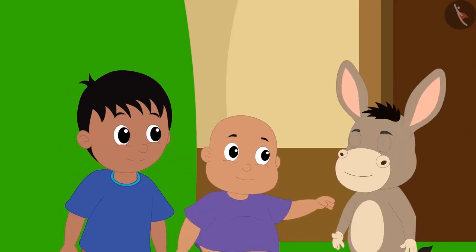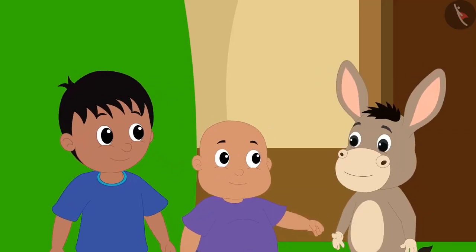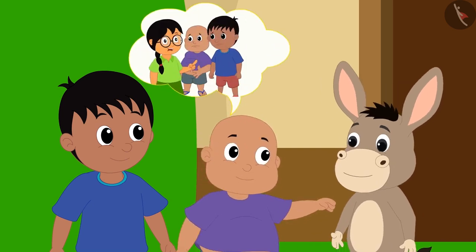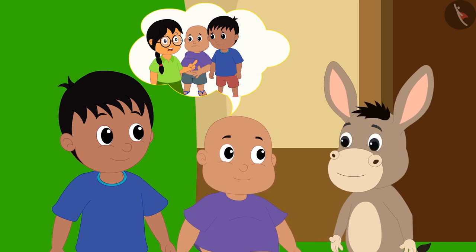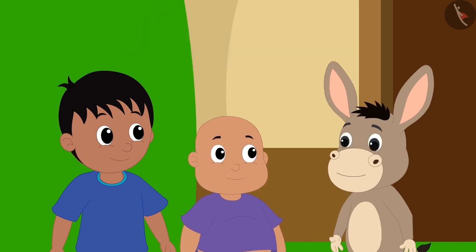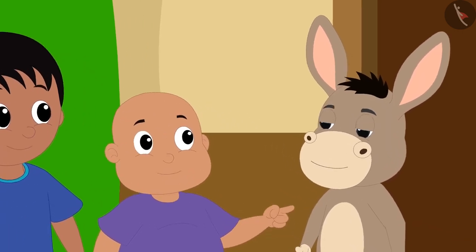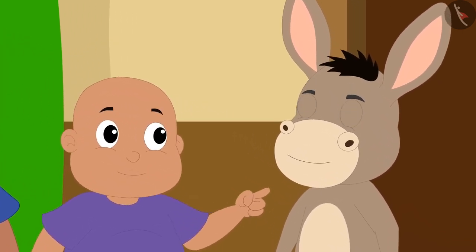Raju and Bablu have gone to Bola the donkey and tell him that Minu told them that no one can make a better shape than her. They wanted to have a competition between Minu and Bola. They will make the same shape in the competition.